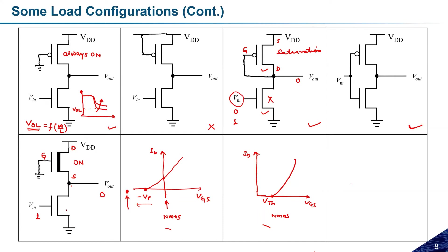Now the other case: if Vin is zero, the driver is in the off state. Since the depletion load is in the on state, VDD will be transferred to Vout. So if Vin equals zero, VDD is transferred to Vout; and if Vin equals one, it acts as a voltage divider because both transistors are on.